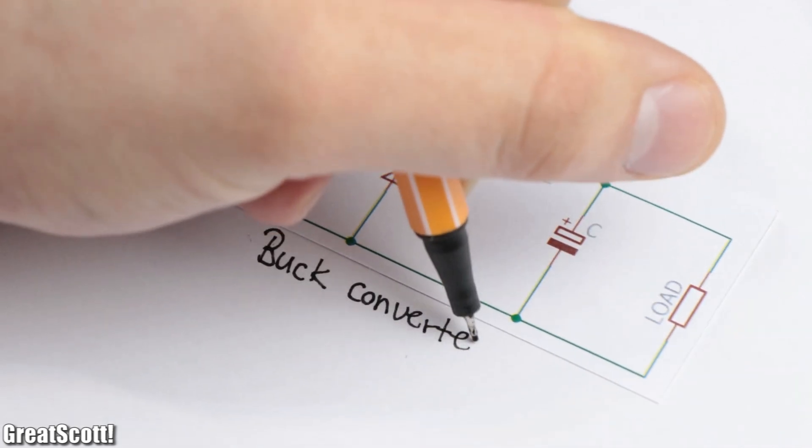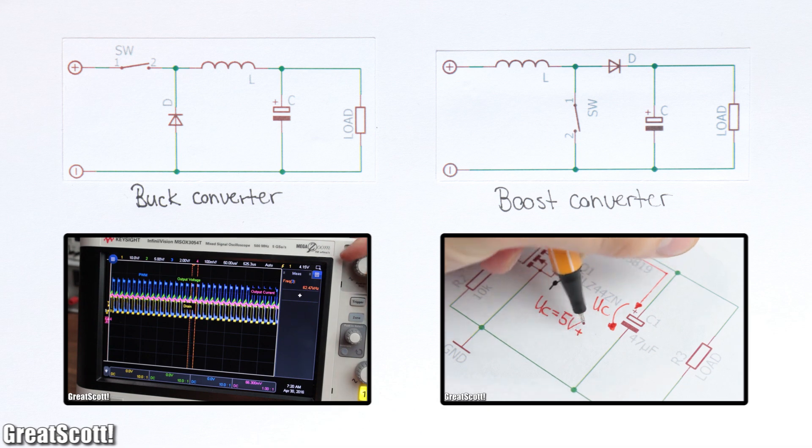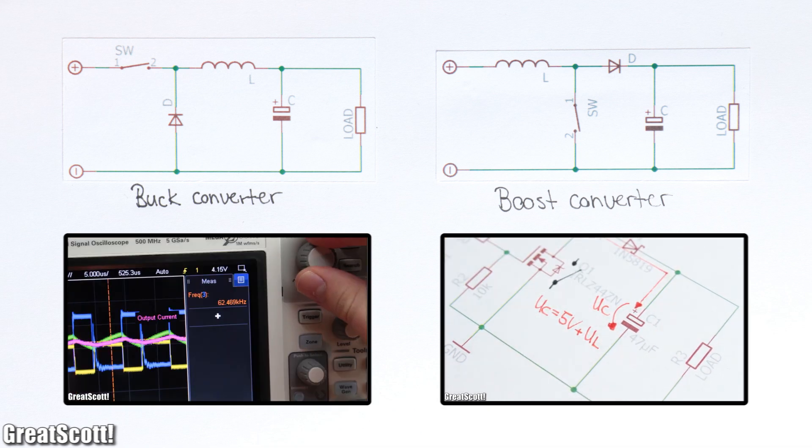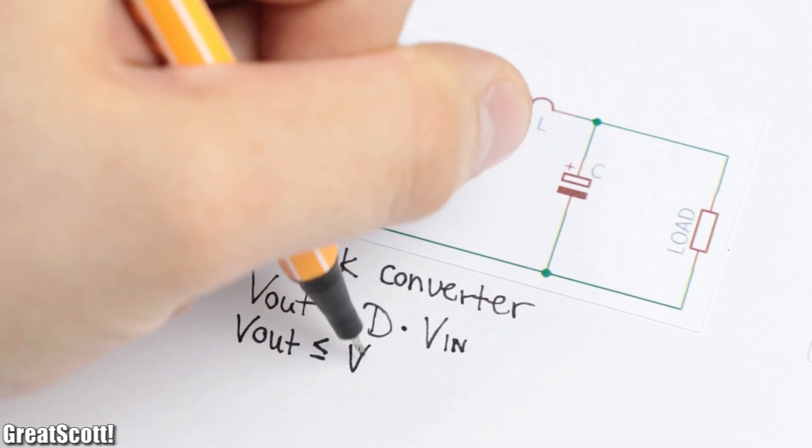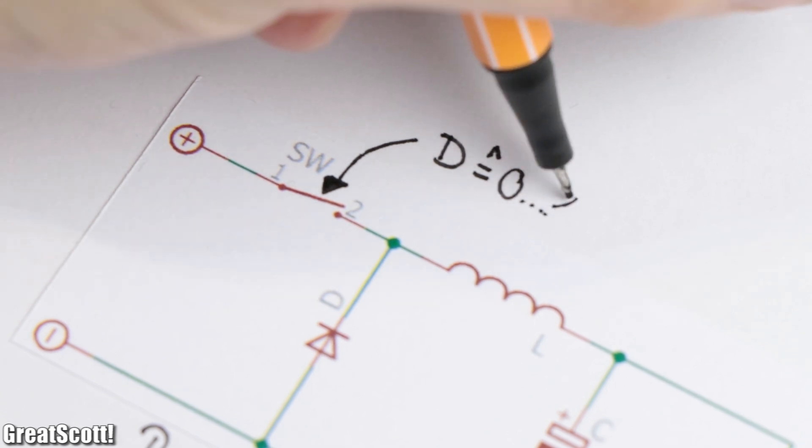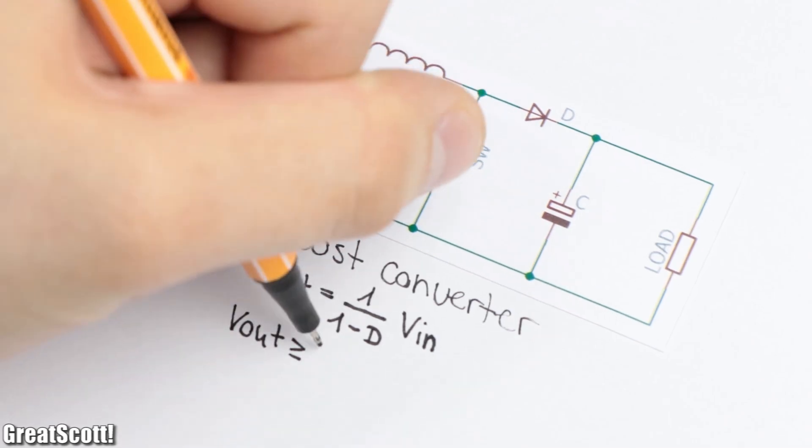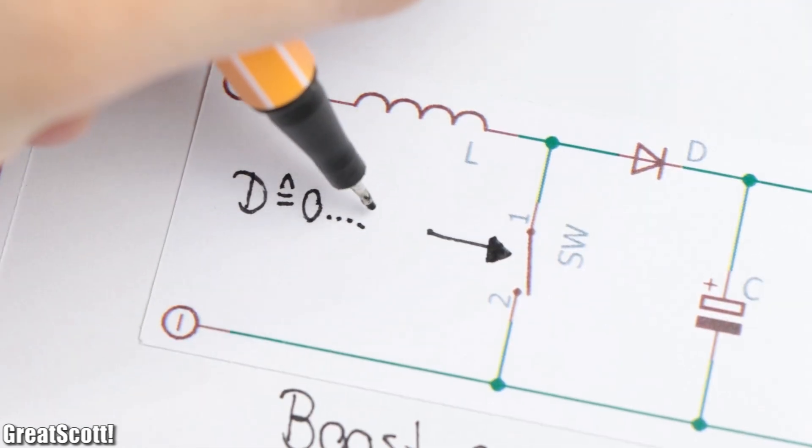The topology and working behavior of a buck and boost converter should be known by now. If not, make sure to watch my previous videos about the subject. In a nutshell, the buck converter outputs a voltage smaller than the input voltage dependent on the duty cycle of the used switch, and the boost converter outputs a voltage higher than the input voltage dependent on the duty cycle as well.